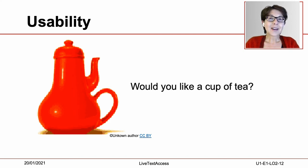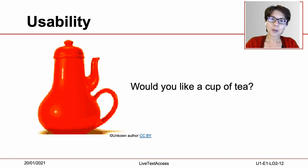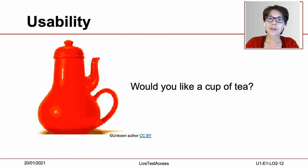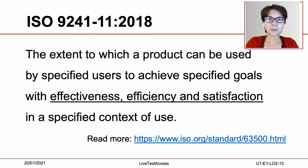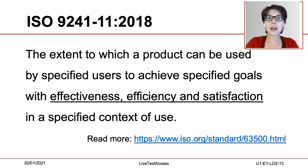Is the design of the teapot appealing? Yes, it is. Is it usable? Well, now that's another story. This is what I mean by intended purpose. If this teapot was designed to be looked at, then the designer did a great job. However, if the teapot was meant for making tea, the design failed. The International Organization for Standardization, ISO in short, defines usability in the standard 9241-11 from 2018. Usability is the extent to which a product can be used by specified users to achieve specified goals with effectiveness, efficiency, and satisfaction in a specified context of use.